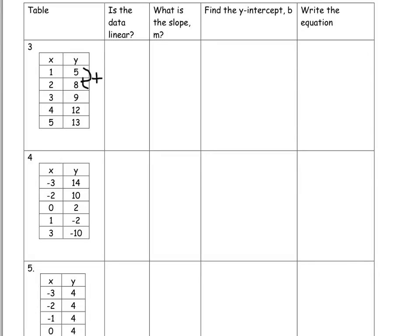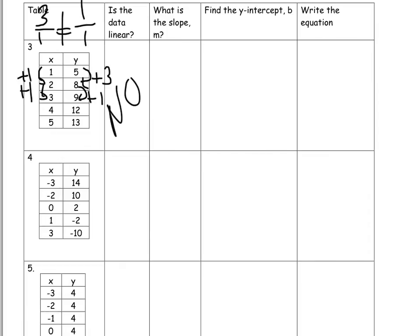Notice this is a change of three, then a change of one, and a change of one. Three over one does definitely not equal one over one, so this one we'd say no — it's not linear.